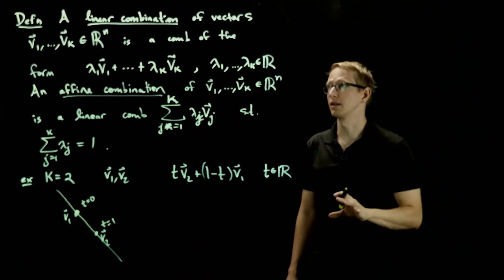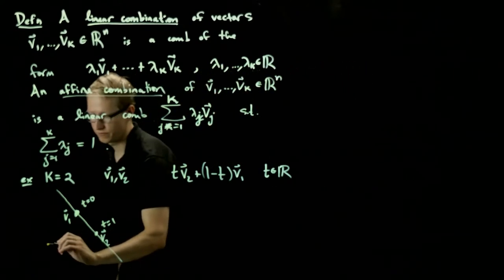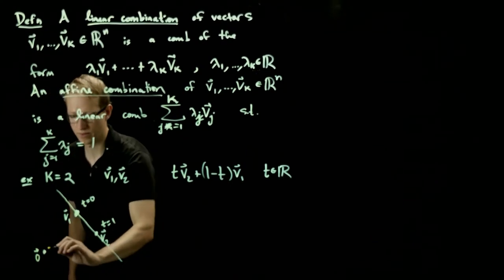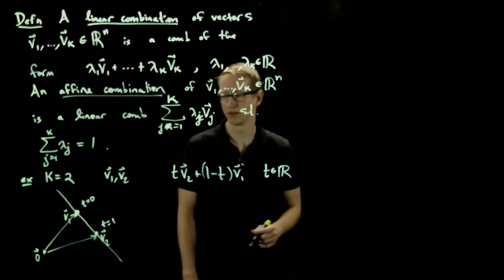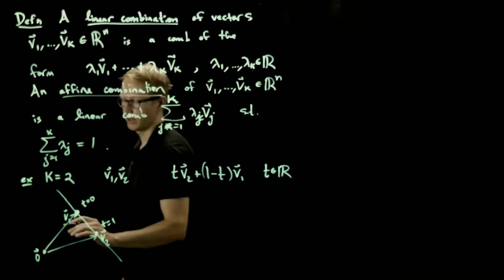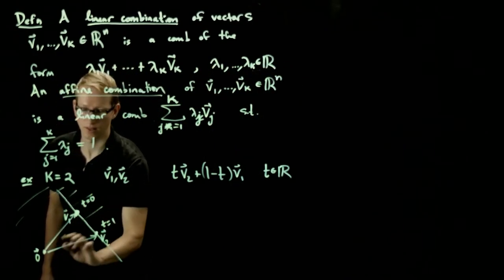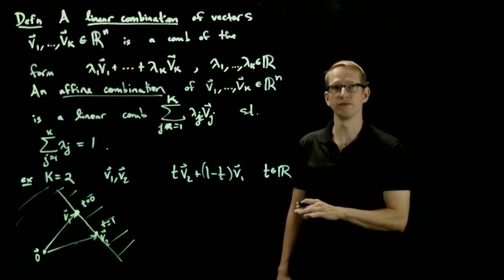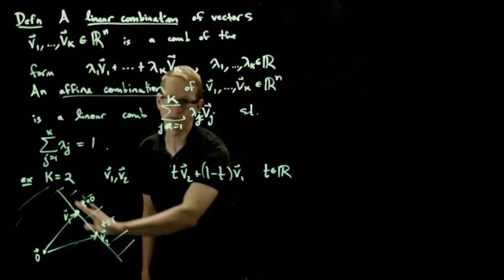This is very different than the set of all linear combinations of v1 and v2, because if, let's say, the 0 vector were here, then v1 would be this corresponding vector, v2 would be this corresponding vector, and all linear combinations of these two vectors is actually the plane obtained from v1 and v2. That's what the span of these two vectors are. But all affine combinations is just this line.